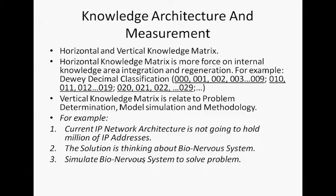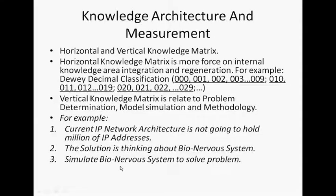Then we talk about something about knowledge detection and measurement. Knowledge is presented as horizontal and vector knowledge metrics. This will use two-network classification to explain. 0000 to 009 is one group of horizontal knowledge. Vertical knowledge metric is related to problem determination, model simulation, and methodology. For example, biology network and internet network. I will explain more detail later.